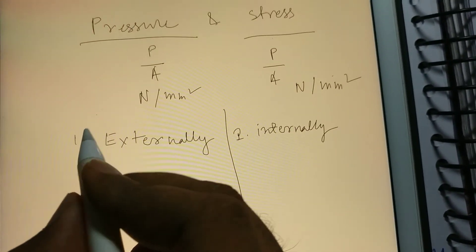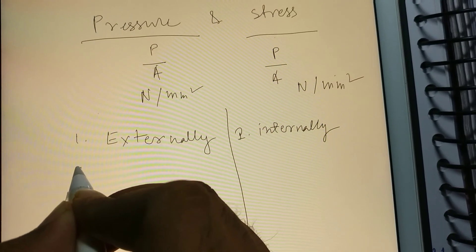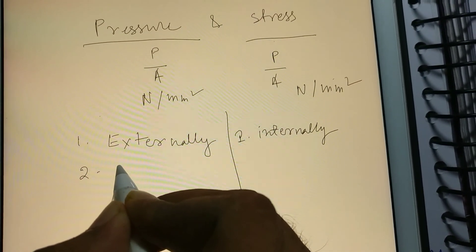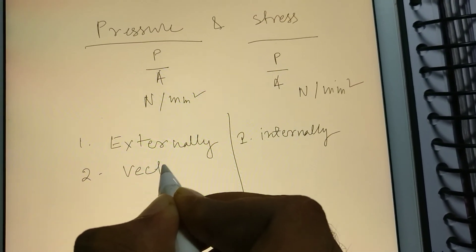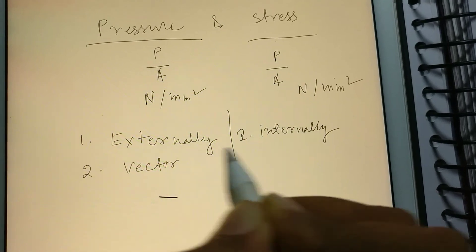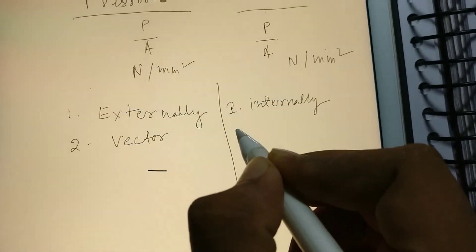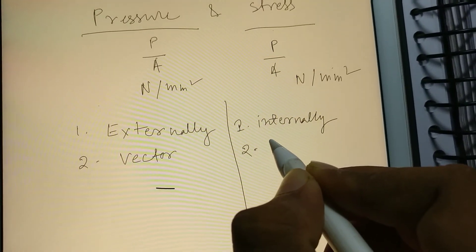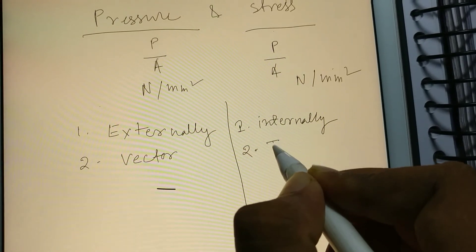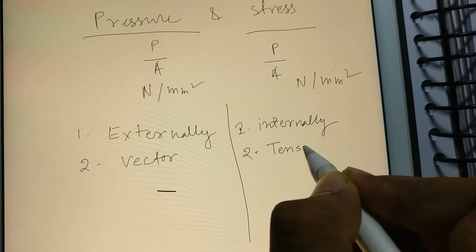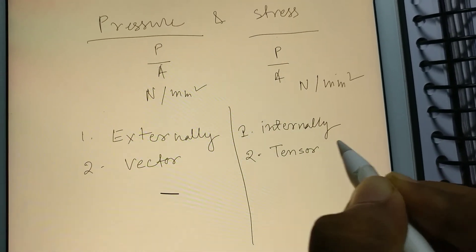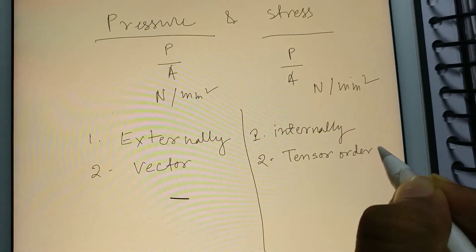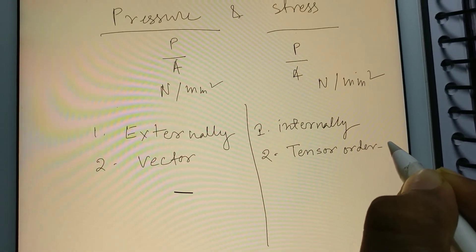The second difference: as per quantity, pressure is a vector quantity, but stress is a tensor quantity of order 2.